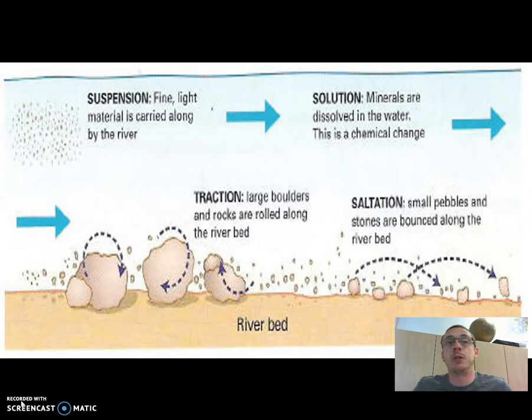Now transportation happens in three main ways. I know it looks like there's four in this slide but there's two of them that we band together. So first we've got suspension. Now suspension, up here, is when really small fine light bits of material, so sands, silts, things like that, basically float along in the river. You can still see them, you could dip your hands into the river, pick up the material and you would be aware that it was there, but it's so small that it will float.